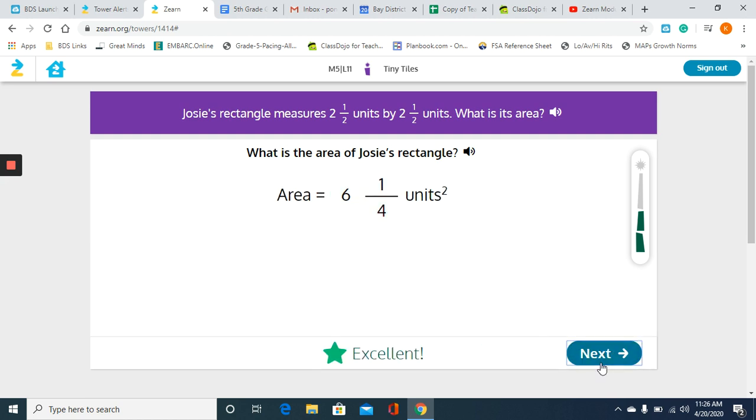Again, I would have paper and pencil and actually write this out. You can use the area model and break apart your whole number and your fractional units, or you can turn your mixed number into an improper fraction and just multiply straight across. But then you have to change it back into a mixed number as well.